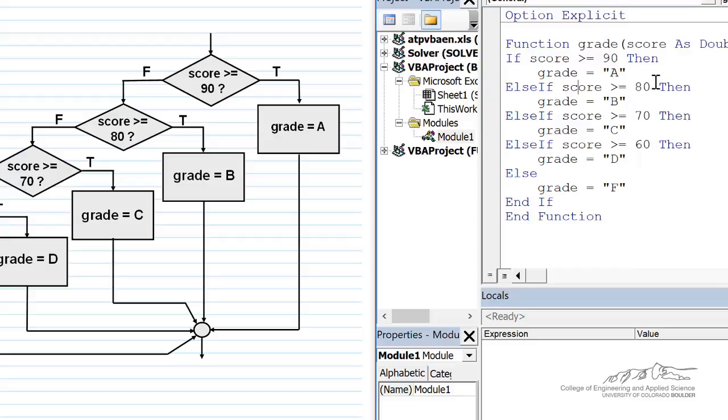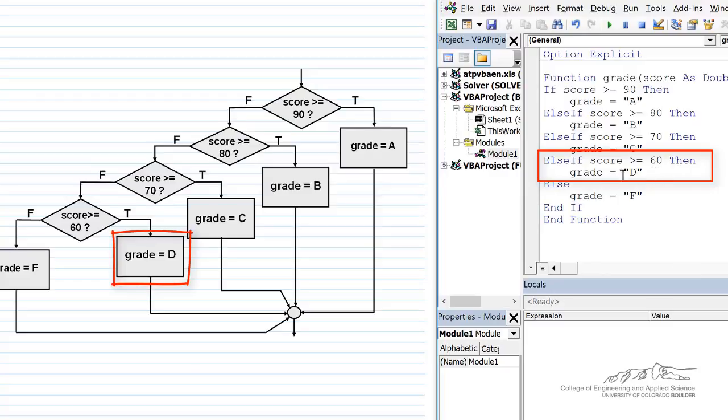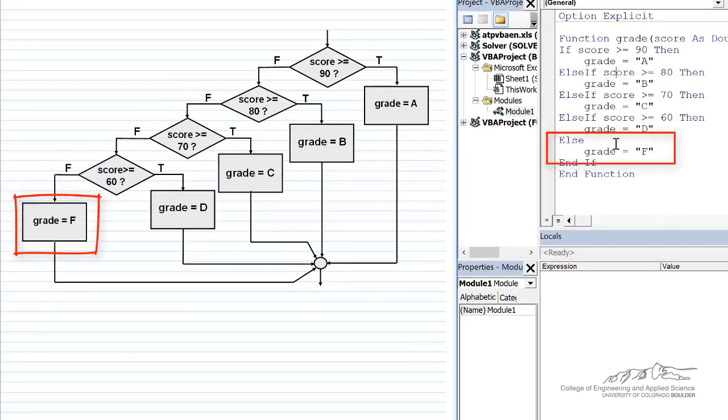So I have the else if for the 80, I have the else if score greater than or equal to 70, then the grade is equal to C. Else if score greater than or equal to 60, then grade equals D. And then the else, if none of these other conditions are satisfied, grade equals F.